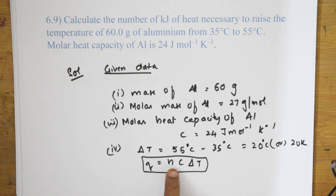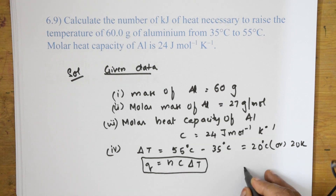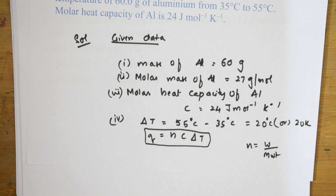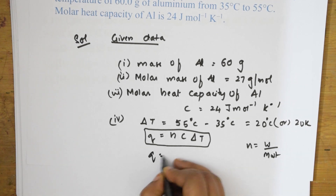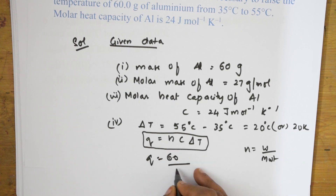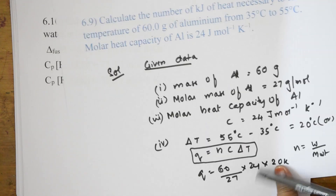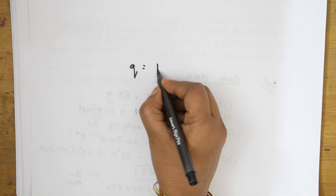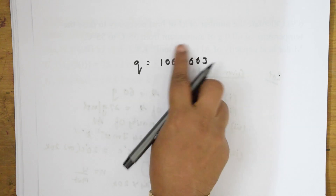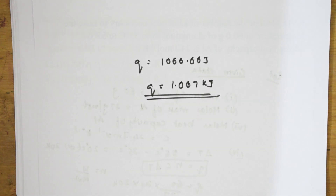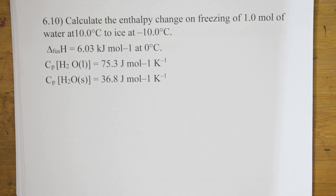Number of moles n = weight / molar mass = 60/27. Substituting: q = (60/27) × 24 × 20 = 1066.66 joules. Converting: q = 1.067 kJ. That is your answer for question 6.9.